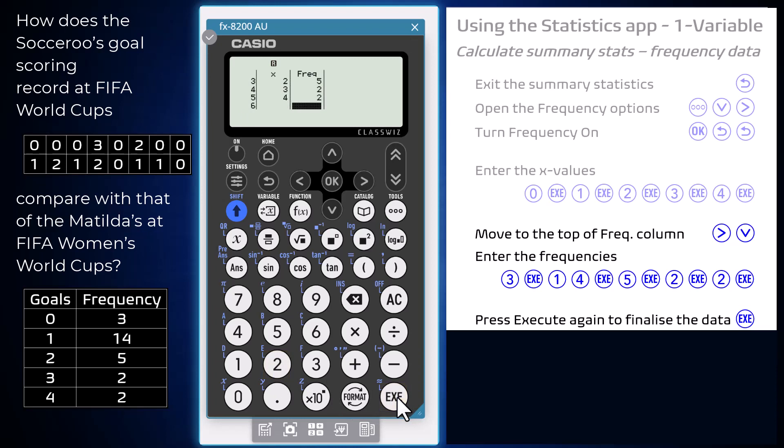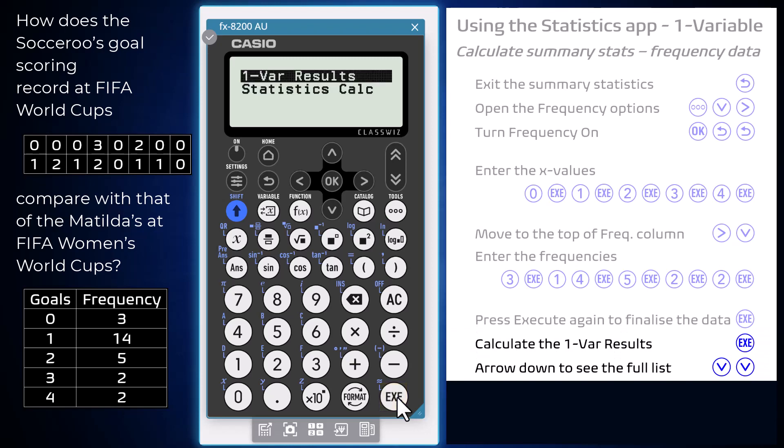With the table entered, press execute to finalize the data set. Now press execute again to obtain the one variable results.